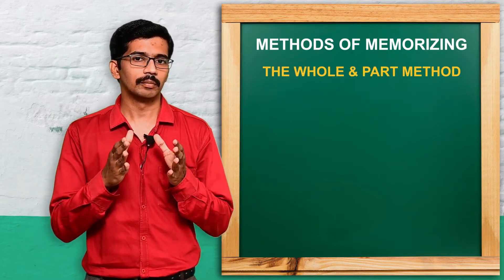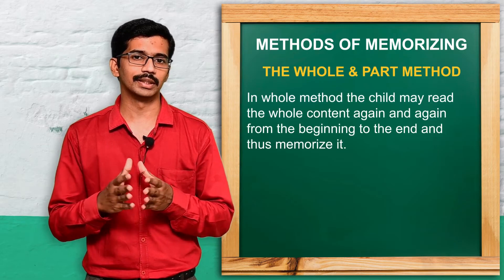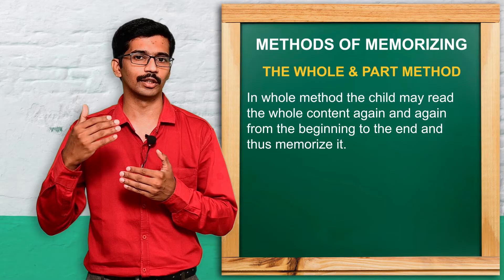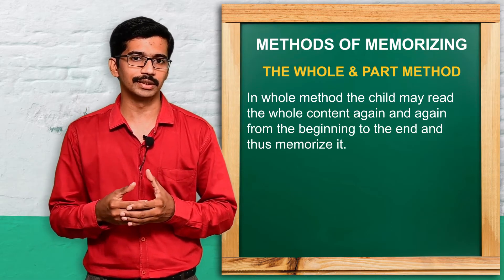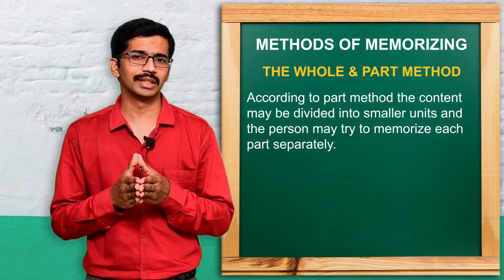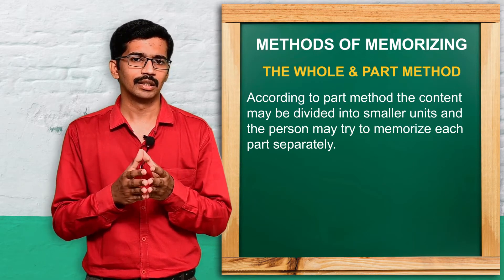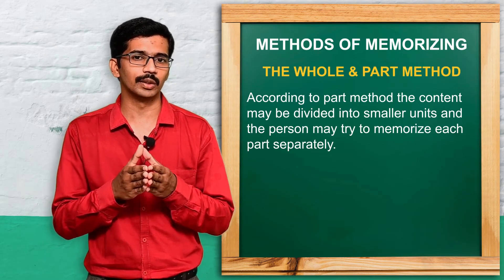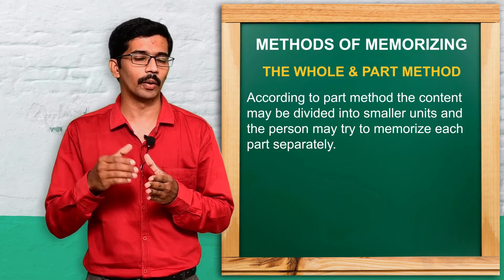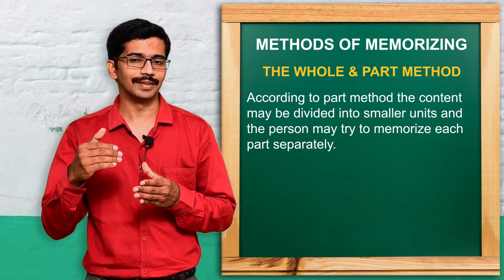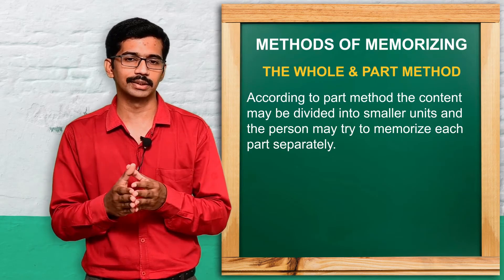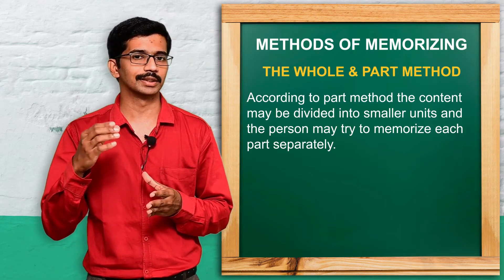Come to the second one: whole method and part method. The whole method is nothing but from the beginning to end, the person will read and twice or thrice repeat the same things to remember. That is the whole method. The part method is nothing but for small children, it is very difficult to remember the entire content. So what they will do is divide into different parts — say like a poem with 16 or 18 lines — into four or five lines each, and each part they will memorize. That is the part method.